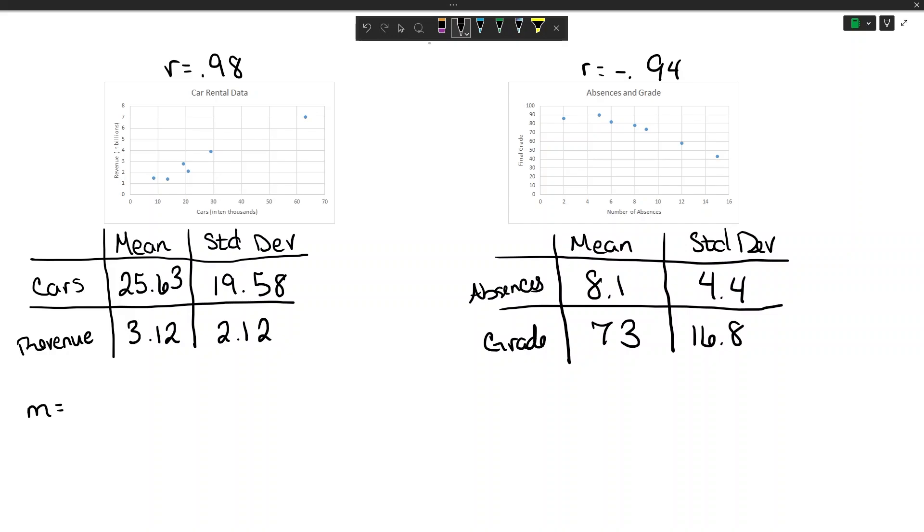To start with, for the slope m, we need to divide the standard deviations. We do the y value, so 2.12 divided by the x standard deviation 19.58. We then multiply that by r, the value of the correlation coefficient which is 0.98, and this ends up being about 1.106.